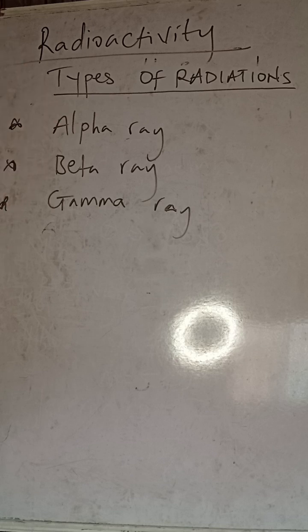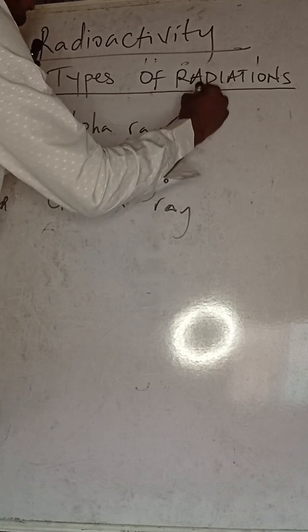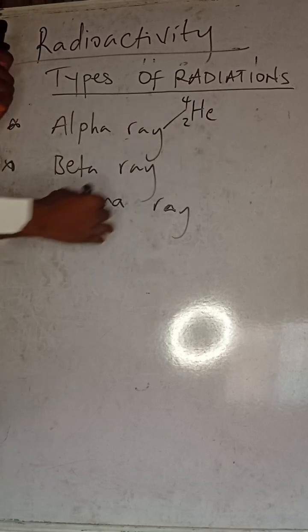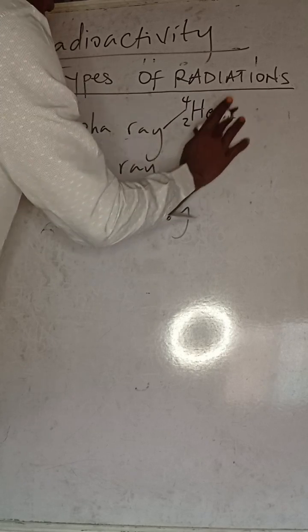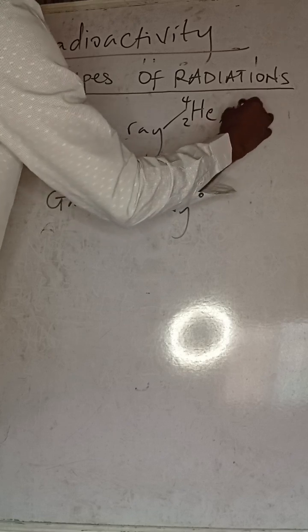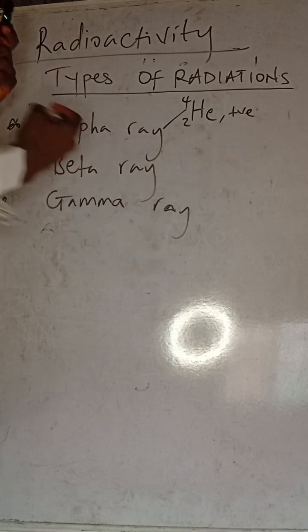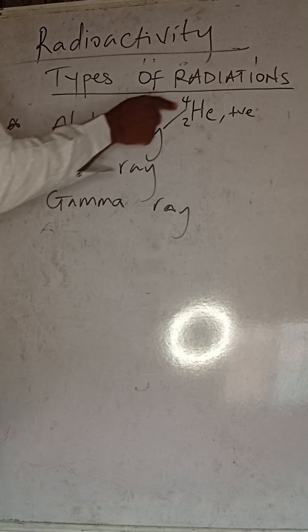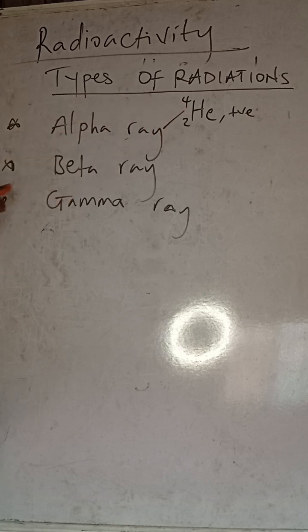Of these three rays, let me quickly describe each type. The alpha ray has a helium nucleus and is positively charged. When we represent alpha ray we use the helium atom. It is positively charged.